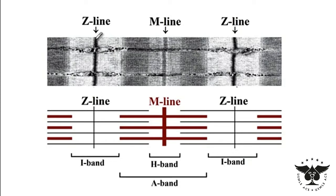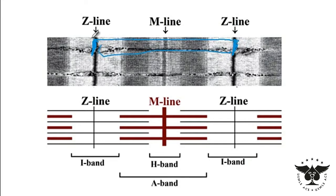Here you can see that there is a sarcomere that runs from one Z line to the next Z line. This entire length that runs from one Z line to the next Z line is the length of one sarcomere, and then there are other sarcomeres attached to this middle one shown right here.